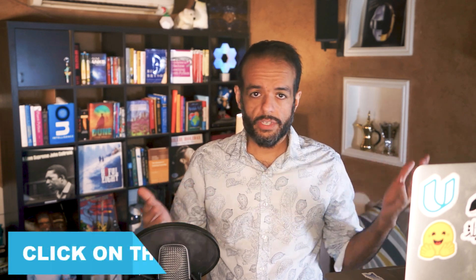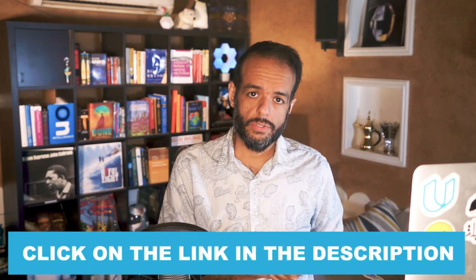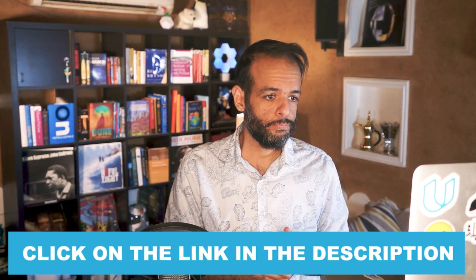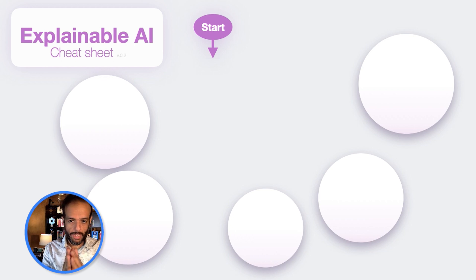We will go over five major categories of explainable AI. We've made this into a cheat sheet image that anybody can use — we'll link to it in the description. And it looks like this. So we start our explainable AI journey at the top.